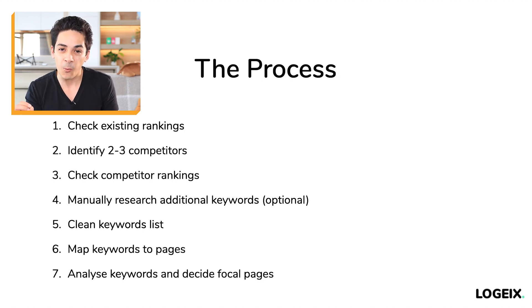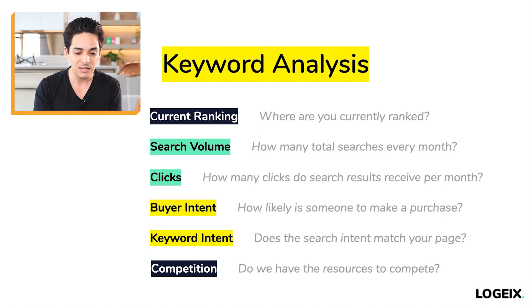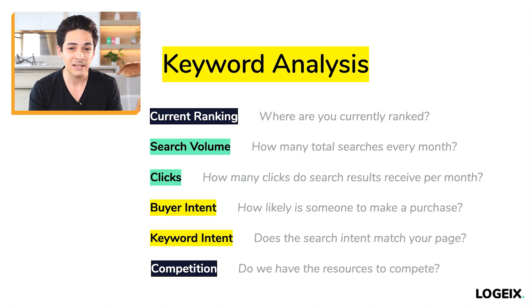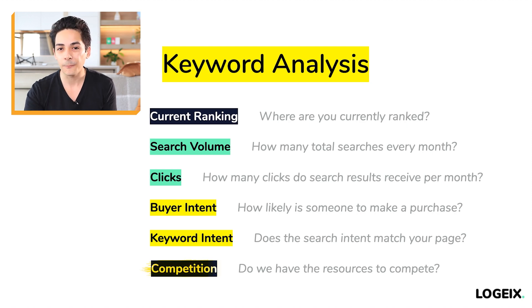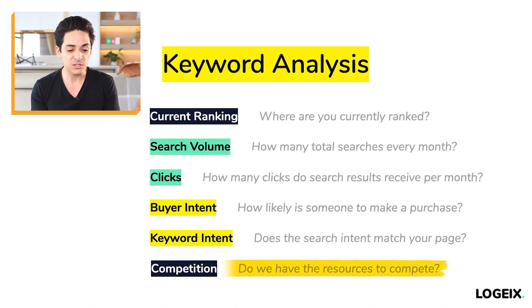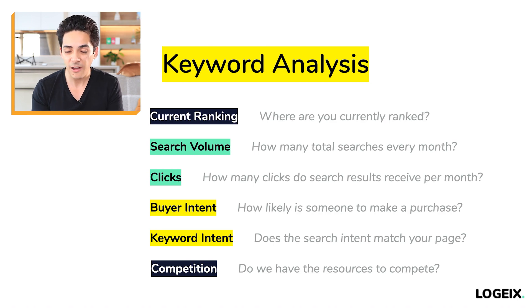We kind of did that, but we didn't quite finish, because the final step - if you remember back to the keyword analysis training - is to look at the current rankings, the search volume, the clicks, the buyer intent, and the keyword intent. But the thing we missed out is competition. Because sure, the search volume is great and the intent is perfect. However, that doesn't mean anything if we don't have the budget to compete against this keyword, and if our website simply isn't a strong enough authority to compete. So in this video, that's what I'll show you how to determine.